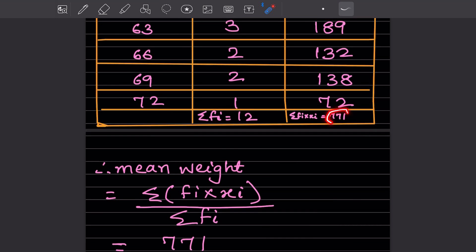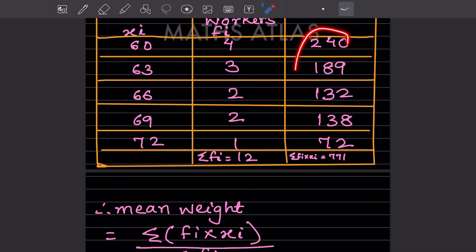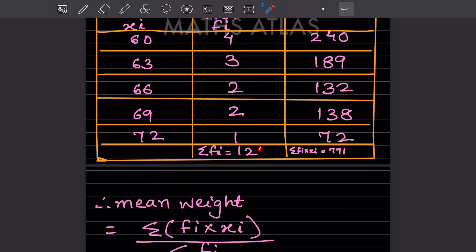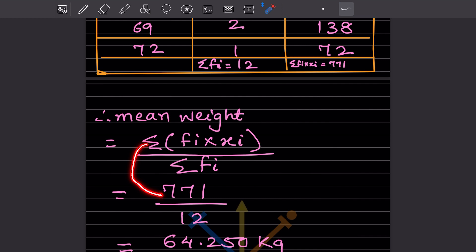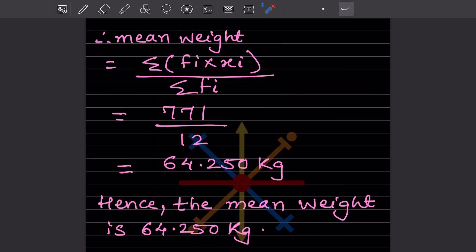You already got the summation of fi times xi equals 771, and summation of fi equals 12. You will put 771 in the numerator and 12 in the denominator. When you divide, you get 64.250 kilograms.